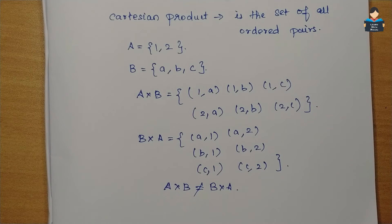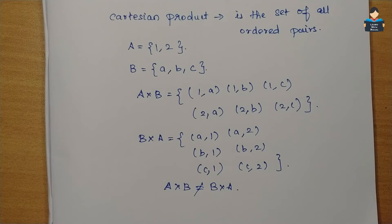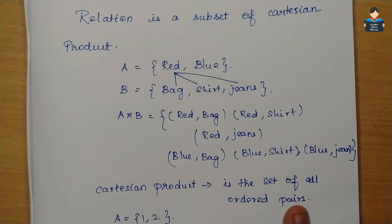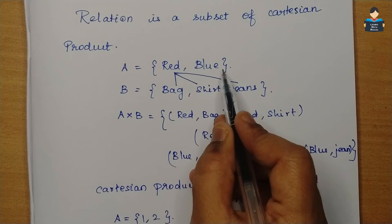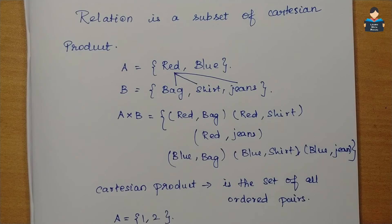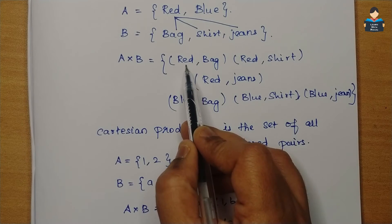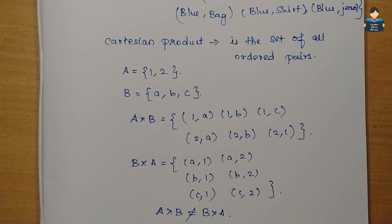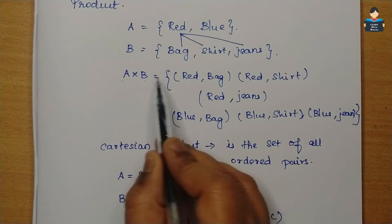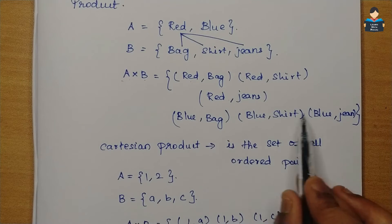Now let's look at Relations. A relation is a subset of a Cartesian product. For our first example, consider A cross B with elements 1, 2, 3, 4, 5, 6. A relation is any subset of this Cartesian product.